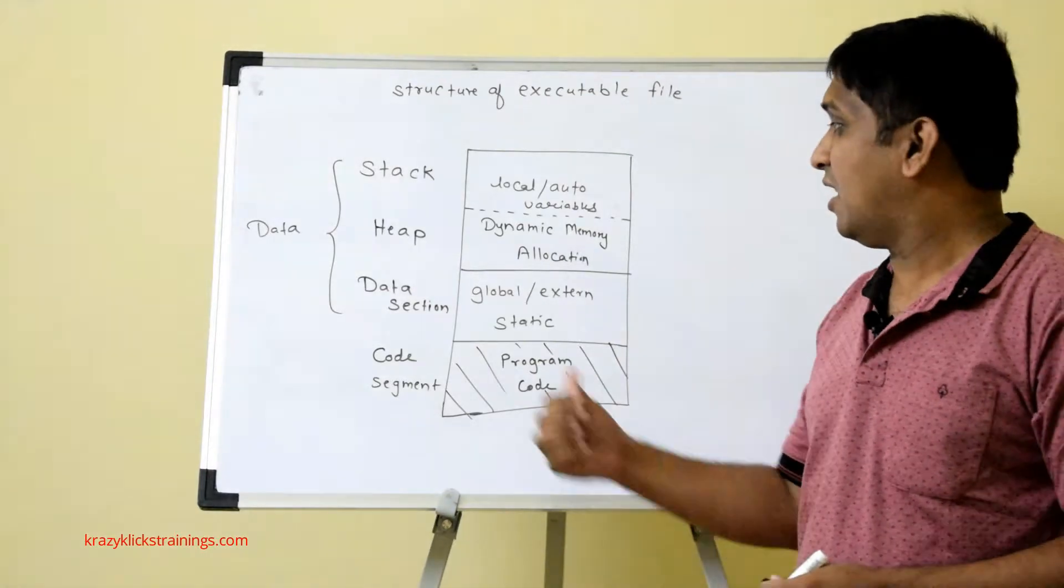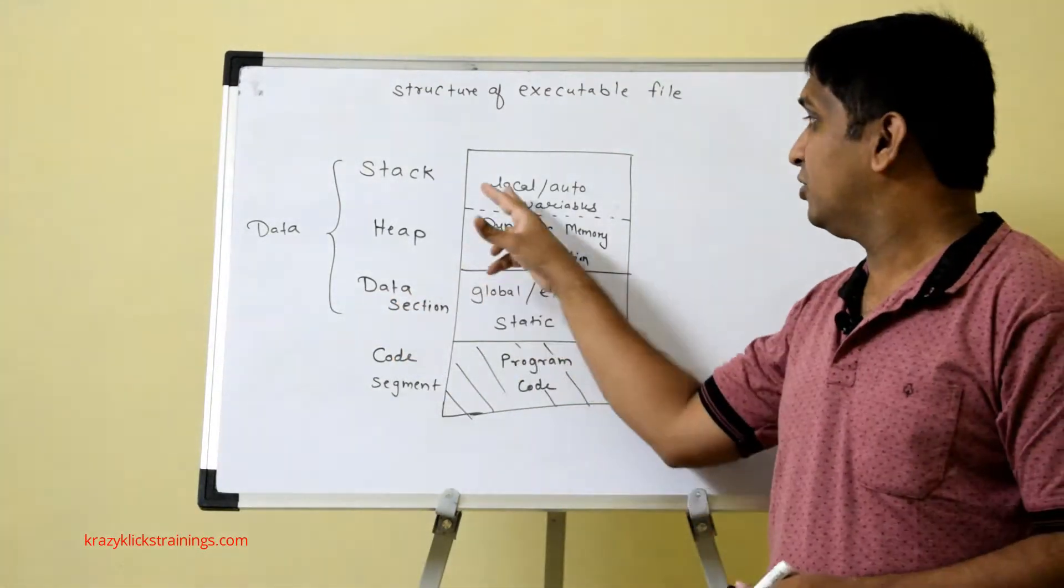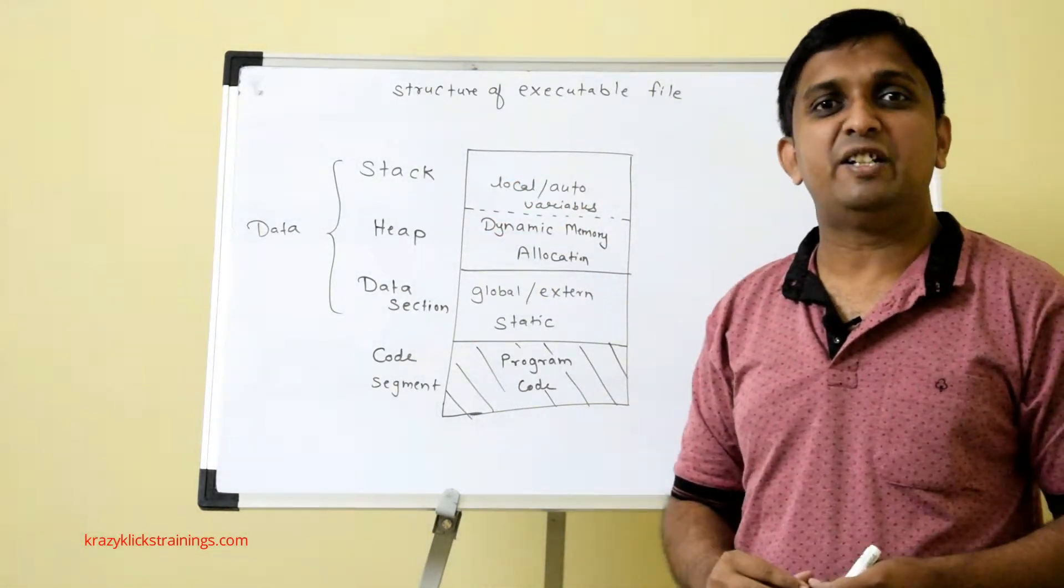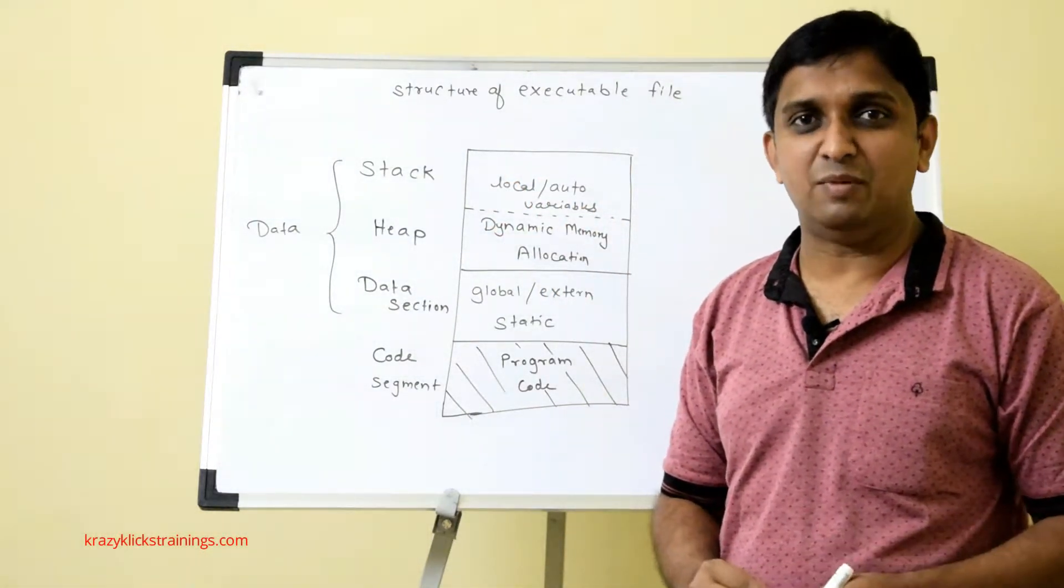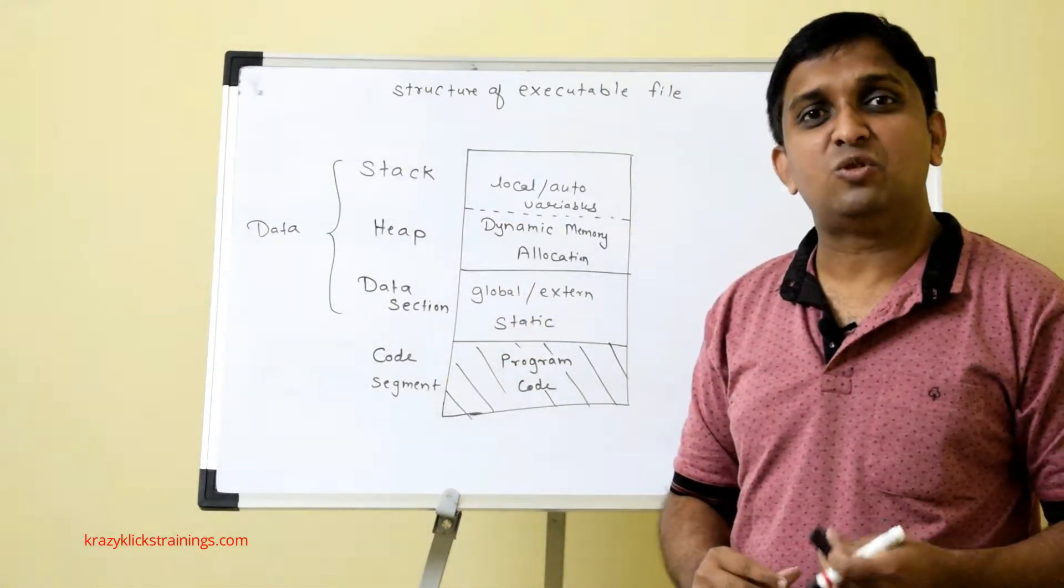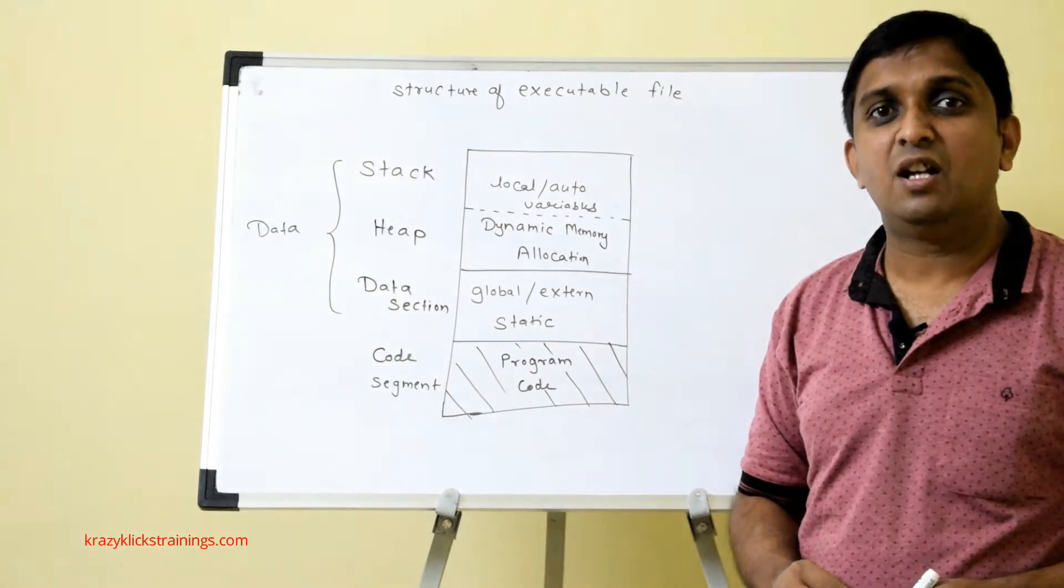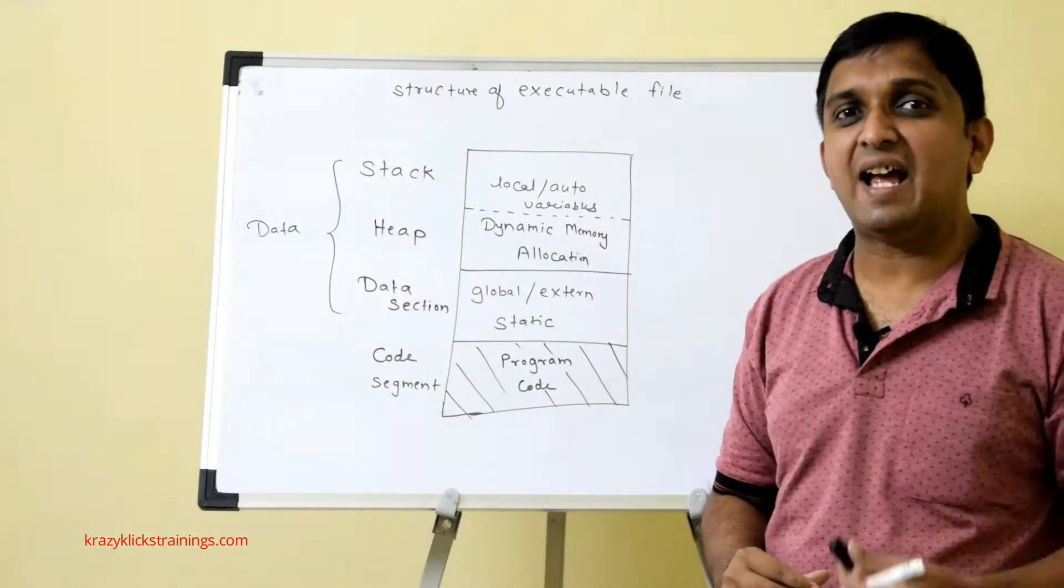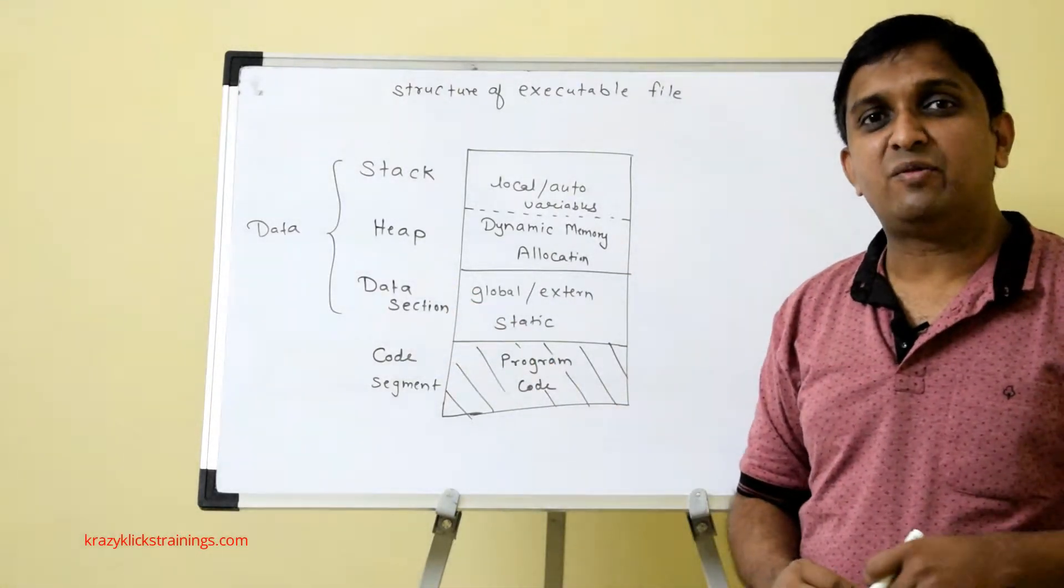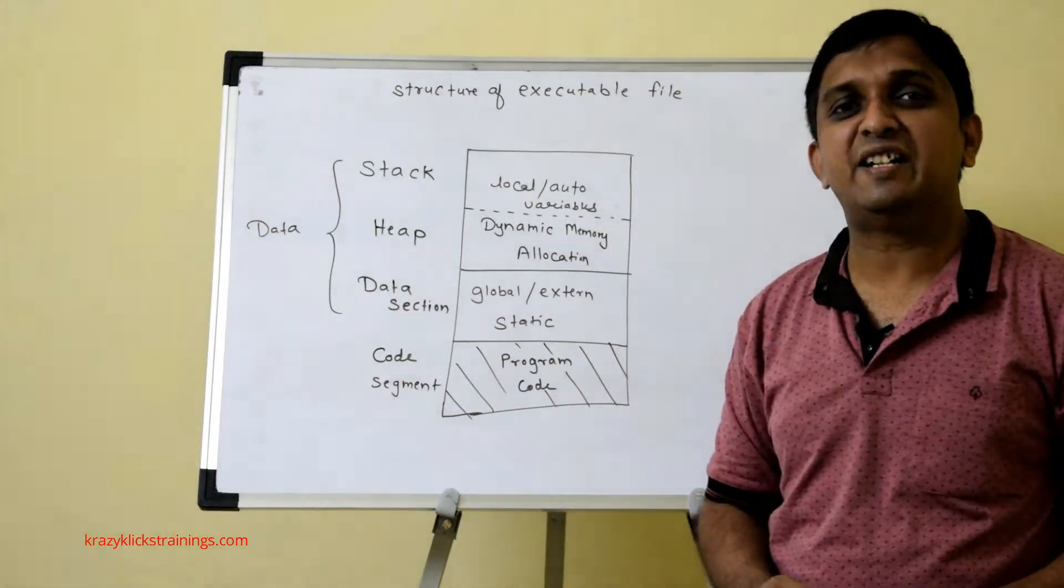Global variables are stored onto the data section. For local variables, automatic storage class is there, so local variables are also called auto variables. For global variables, external storage class is there, so global variables are also called external variables. Locals are stored onto the stack and globals are stored onto the data section. Apart from that, static variables are also stored onto the data section.